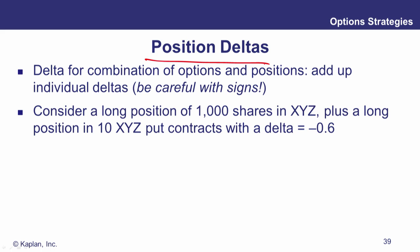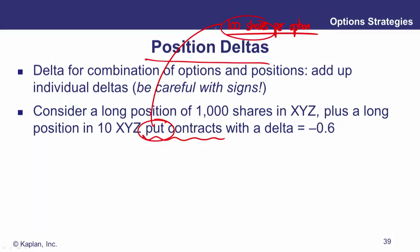Be careful with signs: longs get a positive sign, shorts get a negative sign. Also, in the US it's convention to have 100 shares underlying one option — that's called a multiplier.